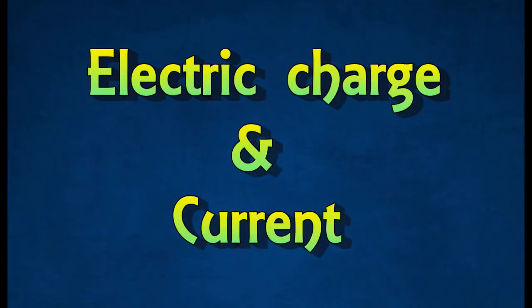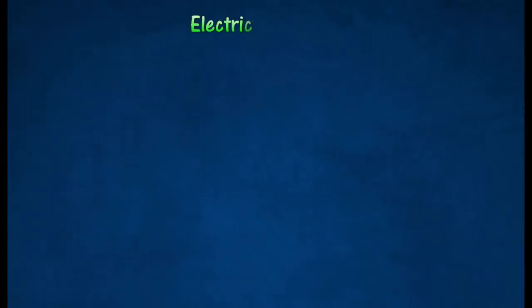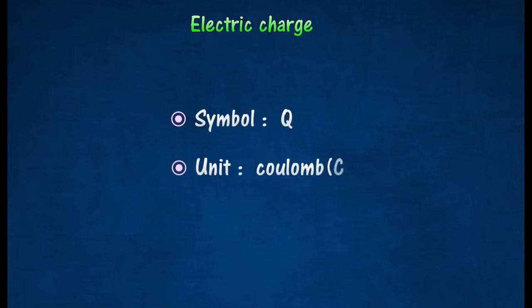Electric Charge and Current. Electric charge is the source of electrical force. Objects that exert electric forces are said to have electric charge. Electric charge is denoted by the symbol Q. The SI unit of electric charge is the Coulomb, and is denoted by the symbol C.